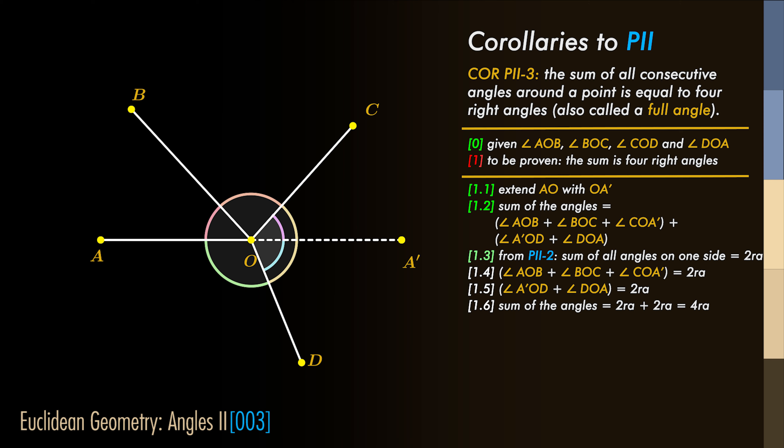And since the sum of all adjacent angles on one side of a line is equal to a straight angle, as we have seen in Corollary 2,